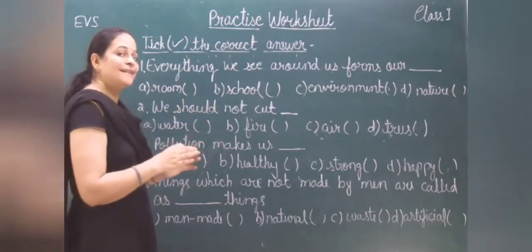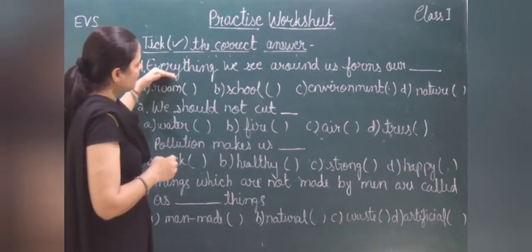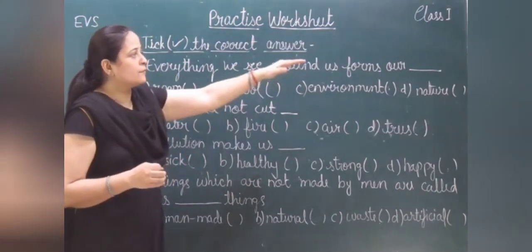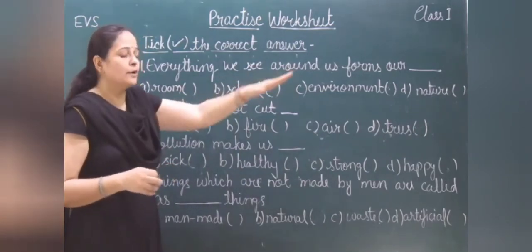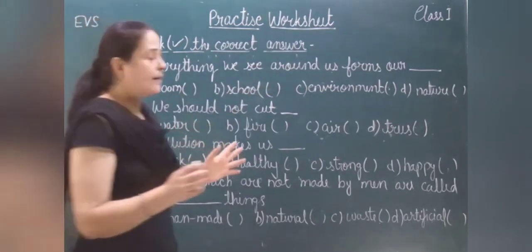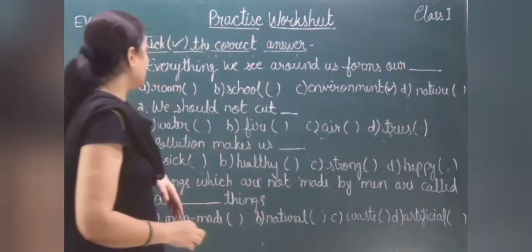Let's see the first question. Everything we see around us forms our dash: room, school, environment, or nature. Everything we see around us forms our environment, so we will take this one.